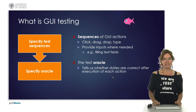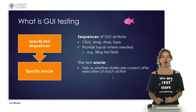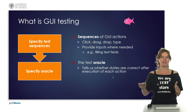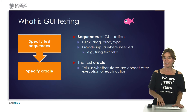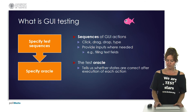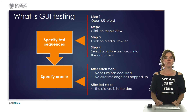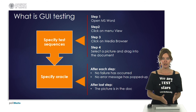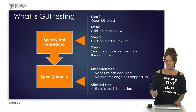So what is GUI testing given this understanding of the graphical user interface? If we have a GUI with widgets, actions, and state changes, then sequences of GUI actions are our test sequences — sequences of clicks, drags, drops, types, and text inputs. On top of that we need to specify a test oracle that indicates whether, after clicking something and arriving in a different state, that state is correct or not. For example, a simple test for Microsoft Word might be: open Word, click the view menu, click the media browser, and select a picture into the document. The oracle checks that no failure or error message occurs during these state changes and that the picture is actually in the document at the end.